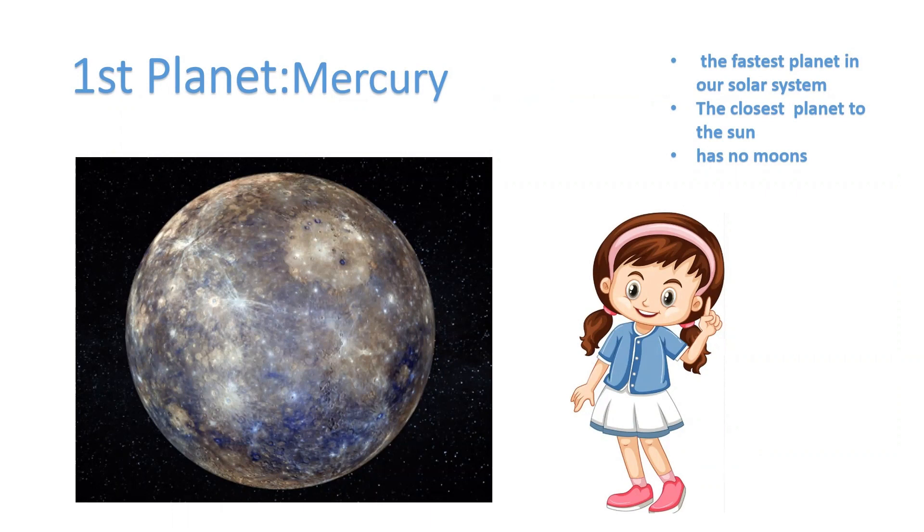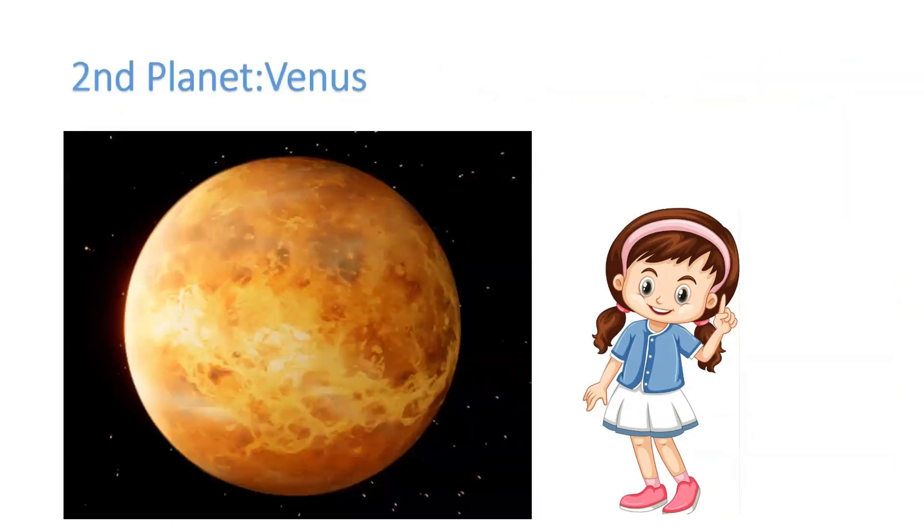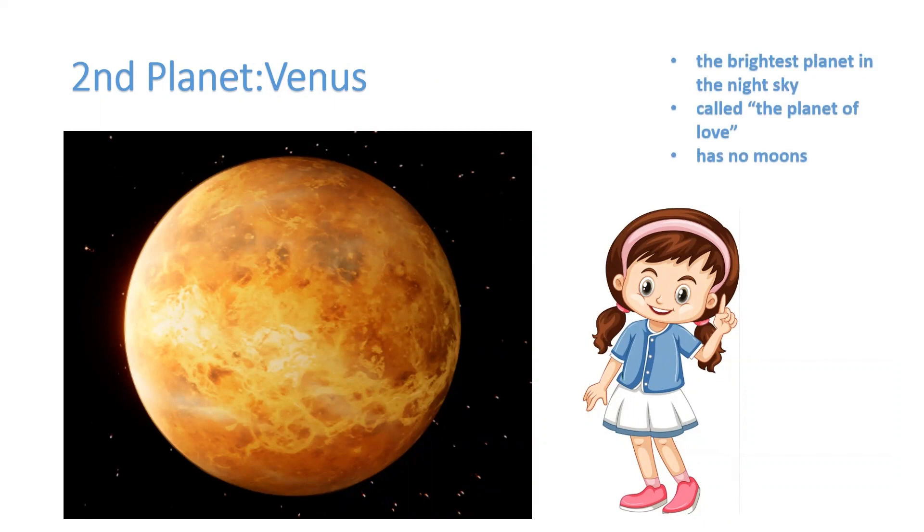Okay, my friends, now let's move to the second planet, Venus. Here's a pretty picture of Venus for you. Even though Mercury is the closest to the sun, Venus is the hottest planet in our solar system.